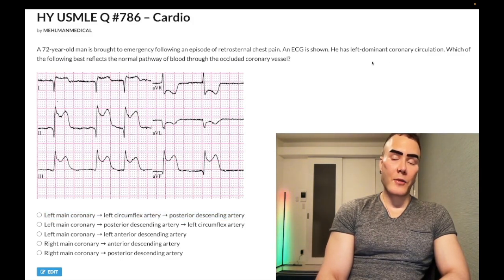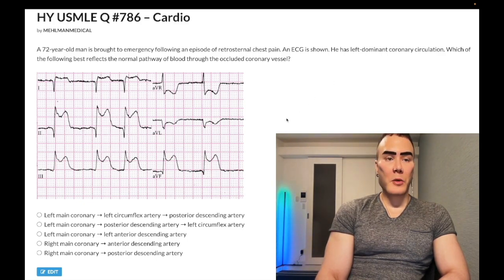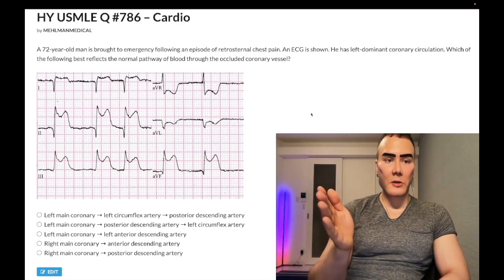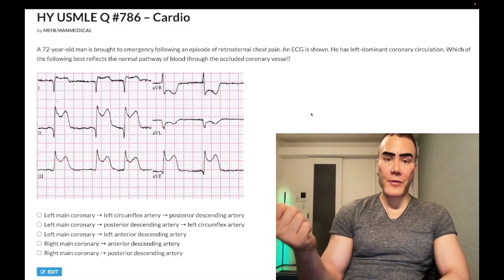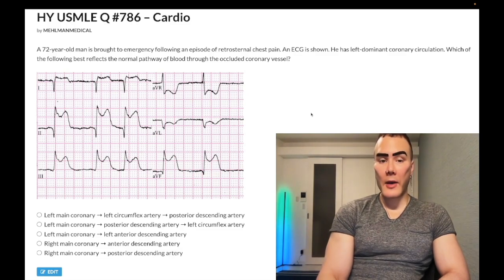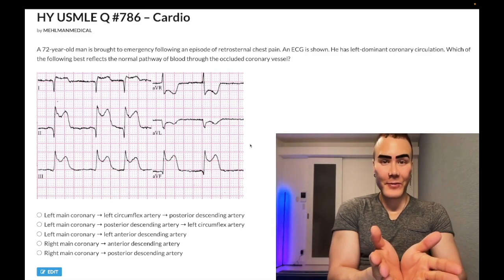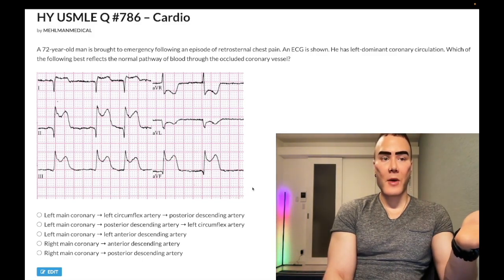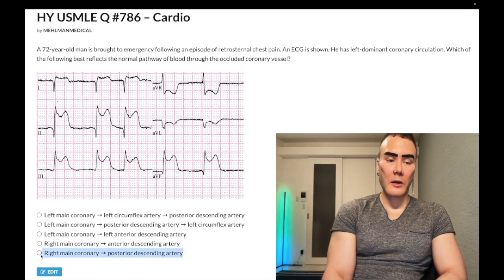When we talk about left versus right dominant coronary circulation, most people are right dominant. 85% plus, literature differs on the exact percentage. Now what the dominant circulation means is which coronary vessel left or right does the posterior descending artery ultimately derive from. So we know right away that the posterior descending artery, even if this were an anterior infarct, which it's not, but in general, we say the posterior descending artery in this patient must come off of the left main coronary. So we're eliminating D and E here.